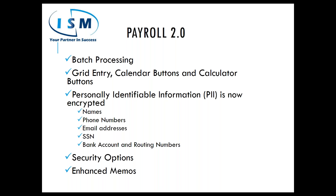All personally identifiable information (PII) is now encrypted. Names, phone numbers, email addresses, social security numbers, bank account numbers, and routing numbers for direct deposit are all encrypted with an encryption key. Unless you have the appropriate security options, you cannot see sensitive data. In employee maintenance, users without PII rights will only see XXXX plus the last four digits of a social security number. Via ODBC, that encrypted information will appear blank, ensuring the payroll system remains very secure.